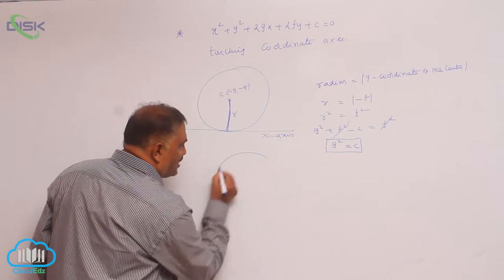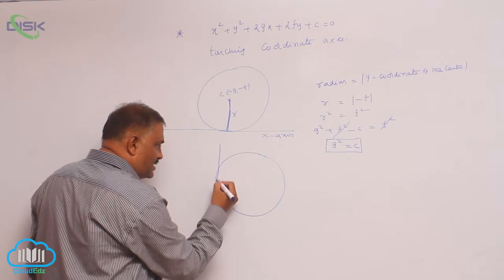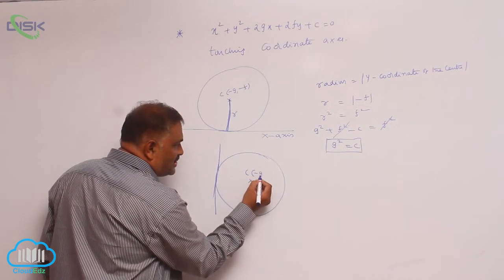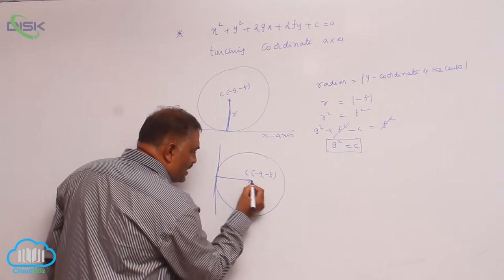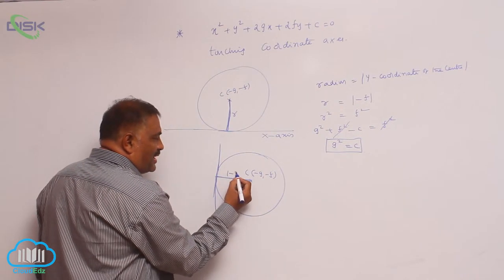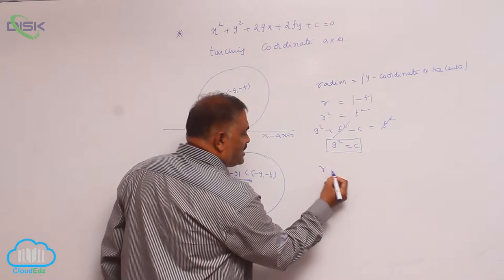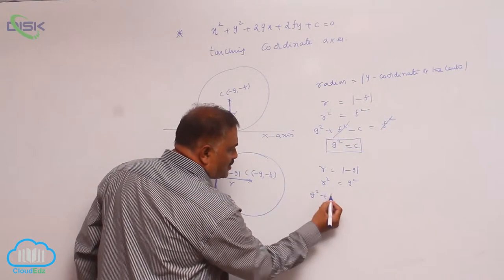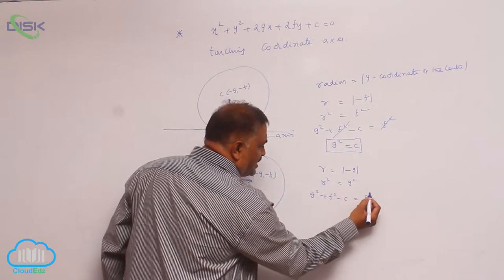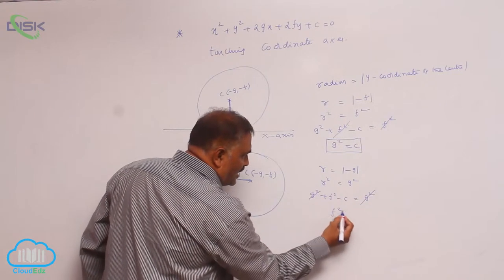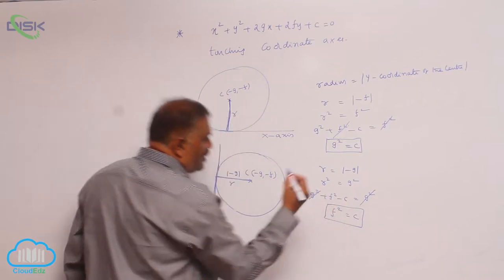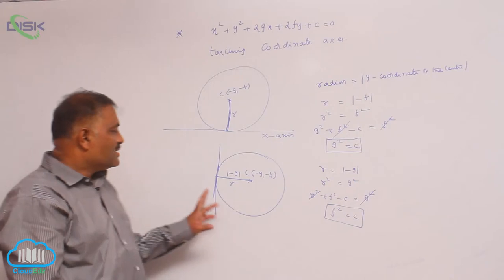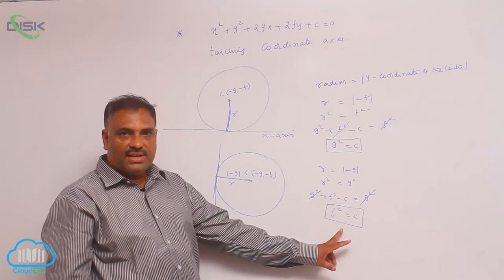In the same fashion, suppose the circle touches the y-axis. The center is again (−g, −f), and the radius is the horizontal component, which is |−g|. So r² = g². Then g² + f² − c = g², and cancelling g² gives f² = c. This is the condition for the circle to touch the y-axis.